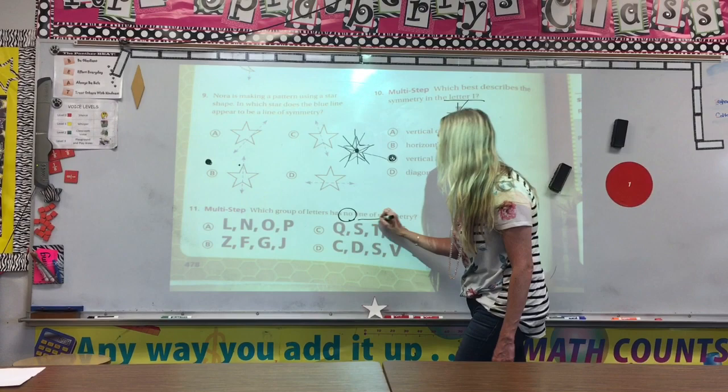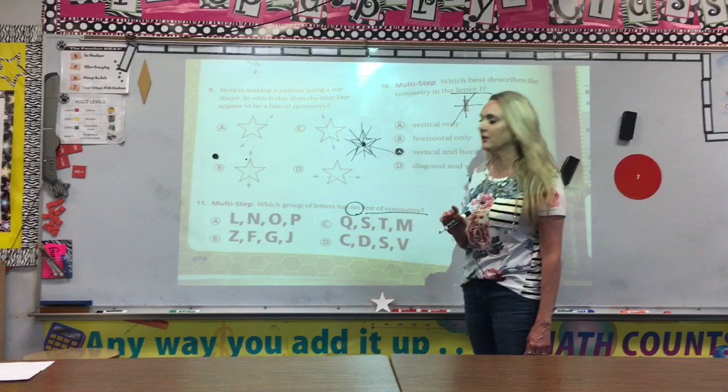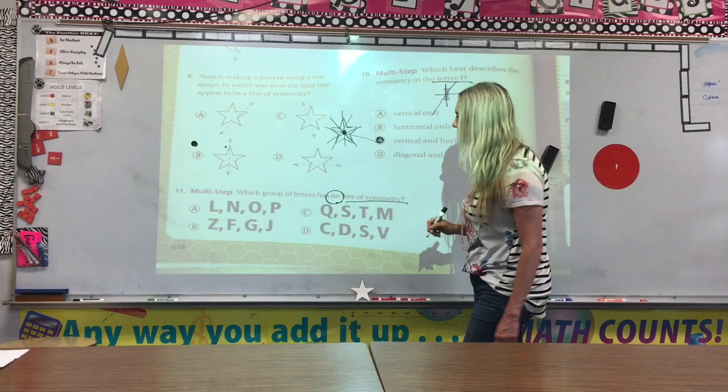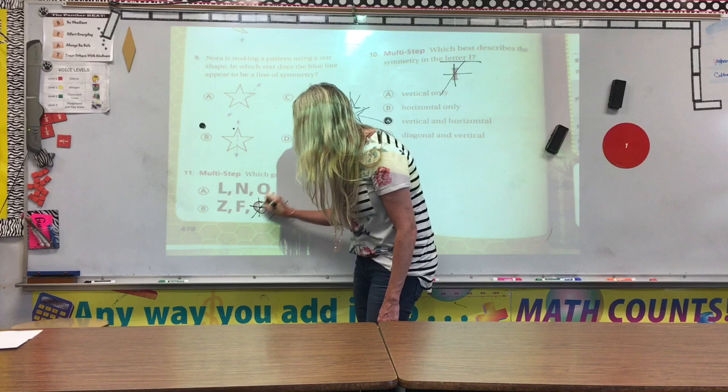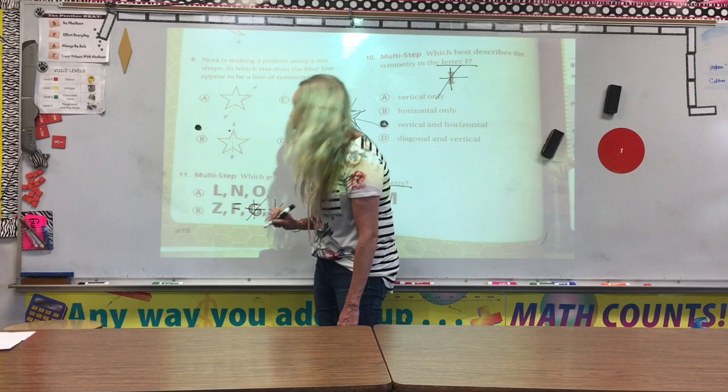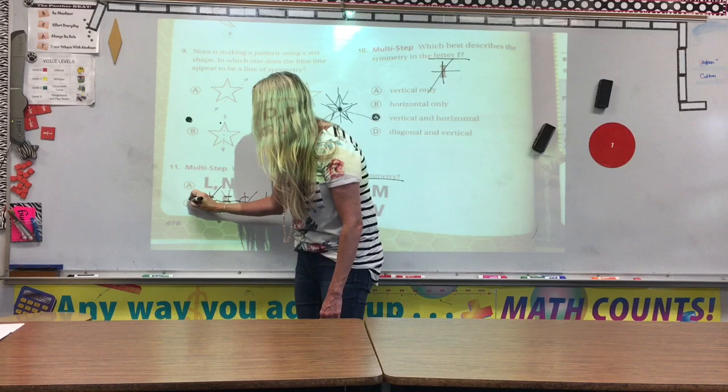Alright, let's look at the next one, number 11. It says, which group of letters has no lines of symmetry? So, we have to find the letter group where none of them can divide in half. Let's take a look at maybe a group that has a lot of little tails. Let's look at the J. Would the J have a line of symmetry? No, it wouldn't. The G has a tail. Would it have lines of symmetry? No, it wouldn't. The F only has two lines. So, it would not have any lines of symmetry. And the Z would not. So, B would be your answer choice.